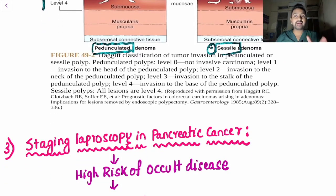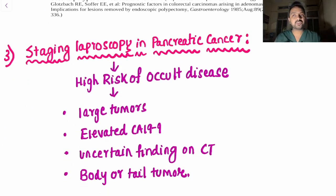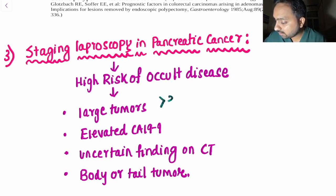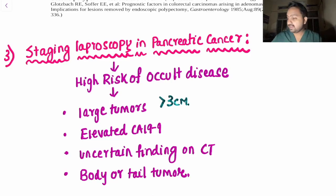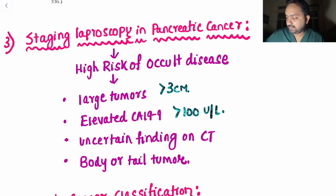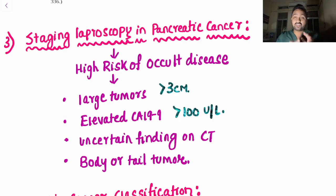Staging laparoscopy in pancreatic cancer is done in cases of high risk of occult disease. The cutoff tumour size is more than 3 centimetres. For elevated CA-19-9, the value indicating staging laparoscopy is more than 100 units per litre. Other indications include uncertain findings on CT or body or tail tumours. These are the indications for staging laparoscopy in pancreatic cancer.